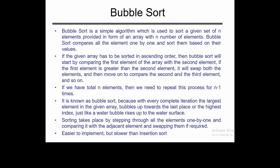Bubble sort is a simple algorithm used to sort a given set of elements provided in the form of an array with n elements. Bubble sort compares all the elements one by one and sorts them based on their values. If the array has to be sorted in ascending order, bubble sort starts by comparing the first element with the second element. If the first element is greater, it swaps both elements and moves on. If we have n elements, we need to repeat this process n times.